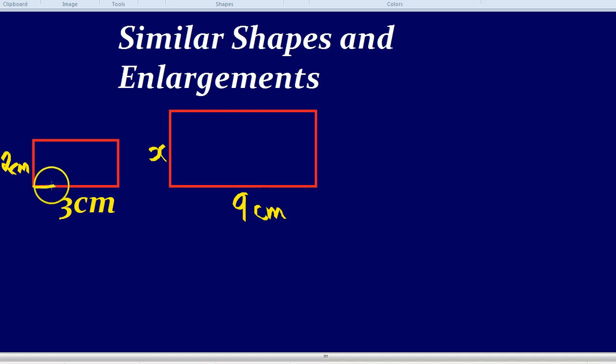We know the base of this rectangle is 3, and we know the base of this rectangle is 9. We couldn't look at this pair, the height, because we only know one. We know that height is 2 and that height is x. But here we know the base is 3 and the base is 9, so we can use that to find the magic ratio.